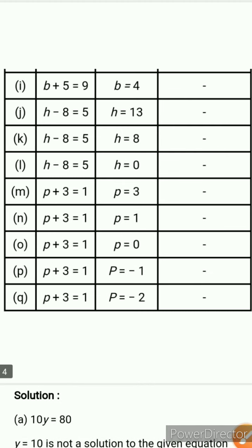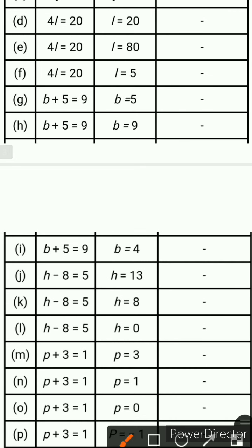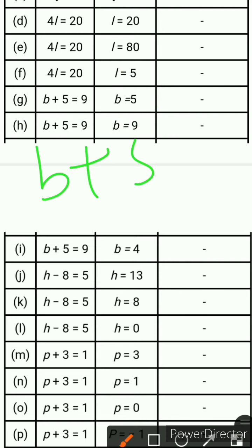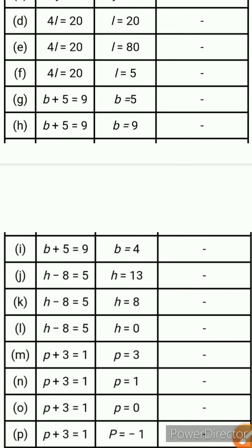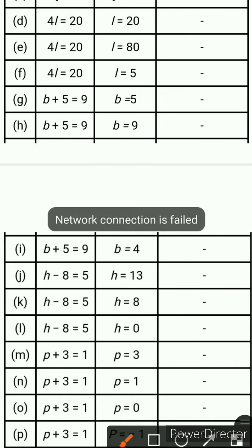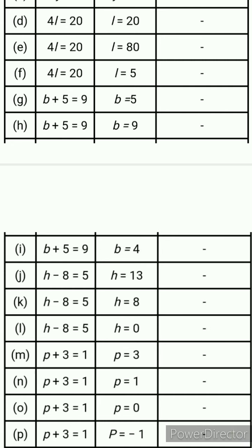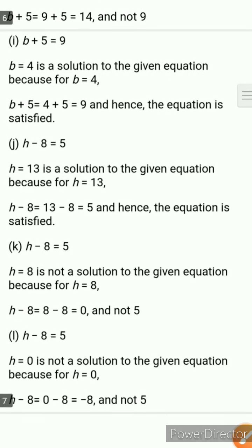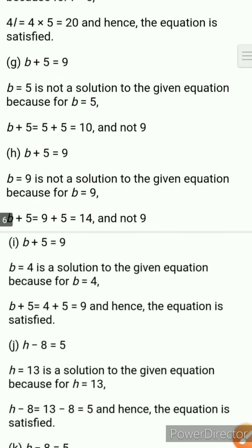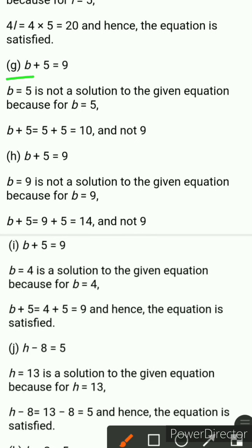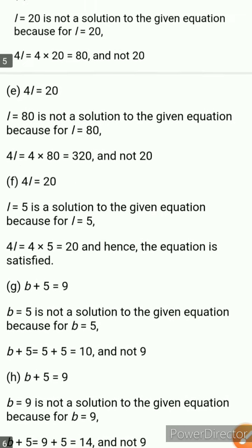Next is b plus 5 equals 9 where the value of b is 5. Put 5 in place of b: 5 plus 5 equals 10, not 9. So the equation is not satisfied. Then for b equals 9: 9 plus 5 equals 14, not 9. So again the equation is not satisfied for b equals 9 either.